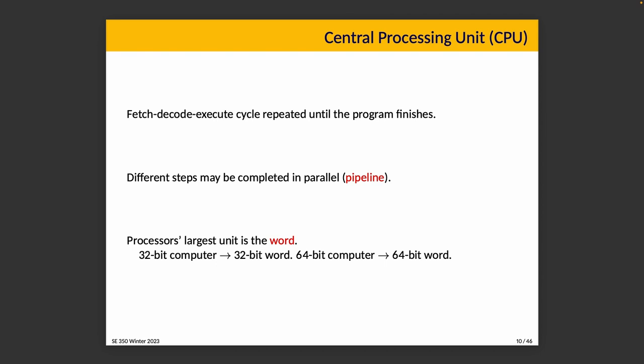We can do these steps in parallel: while executing an instruction, we can be decoding the next one and fetching the one after that. Sometimes an instruction, when evaluated, says we need to go back — we reached a loop instruction. If that happens, the instruction we fetched might not be the right one and we have to redo it. But doing these steps partly in parallel is referred to as pipelining. Just keep in mind that we would potentially work on more than one thing at a time.